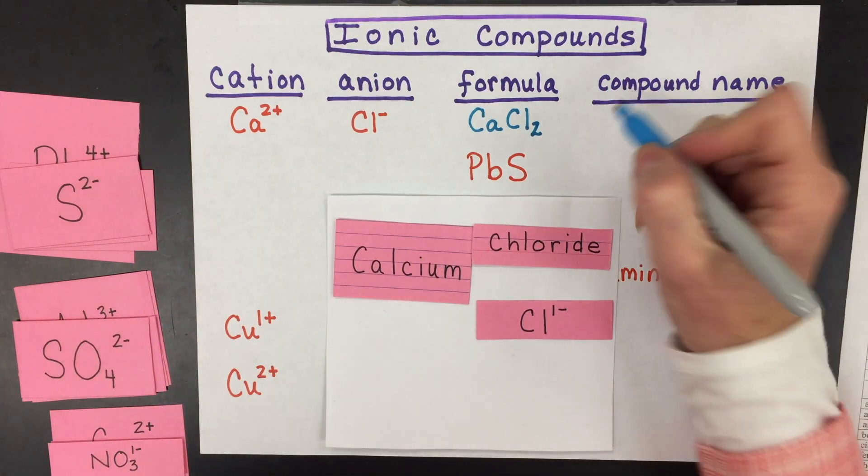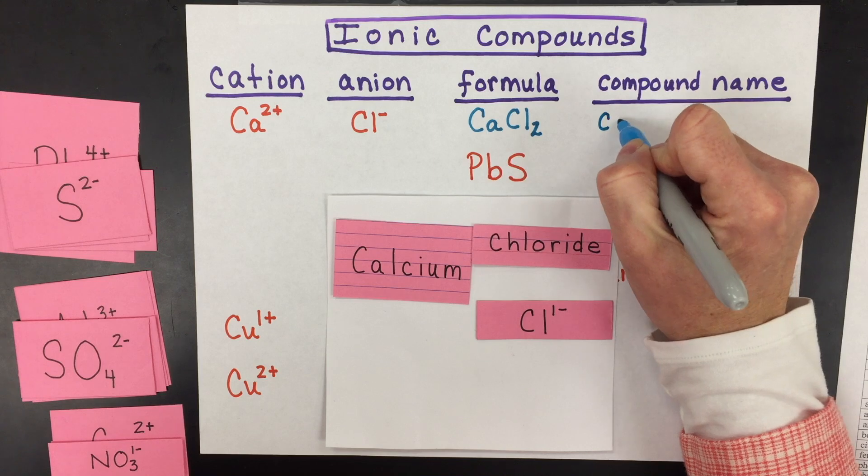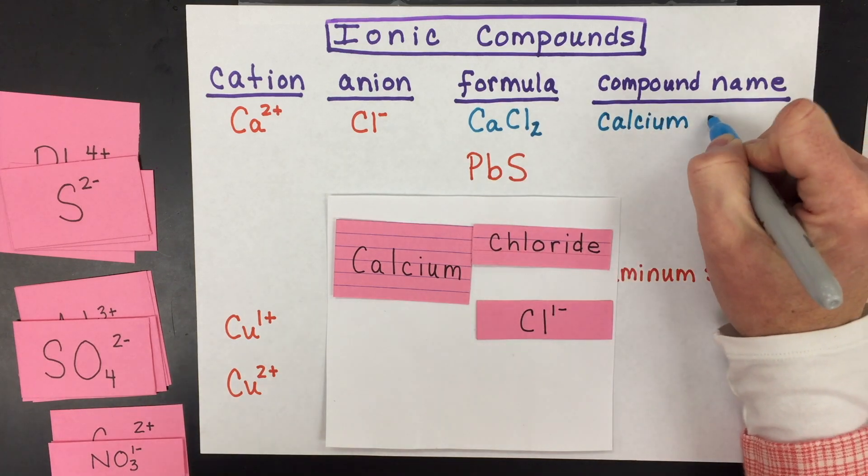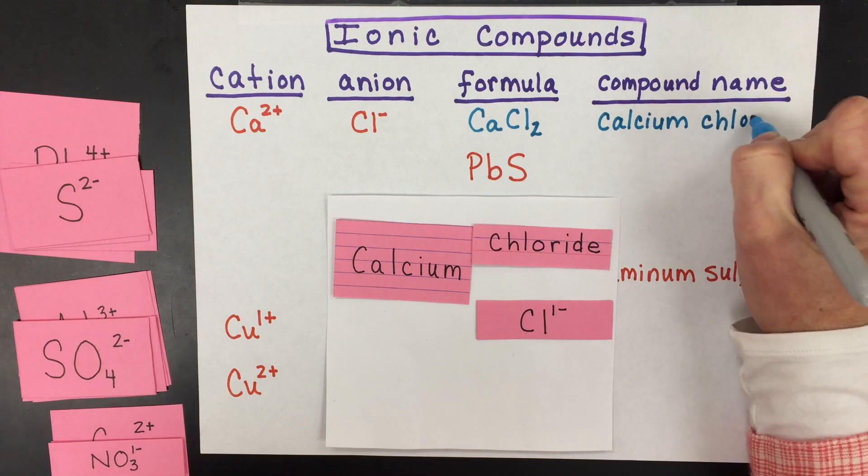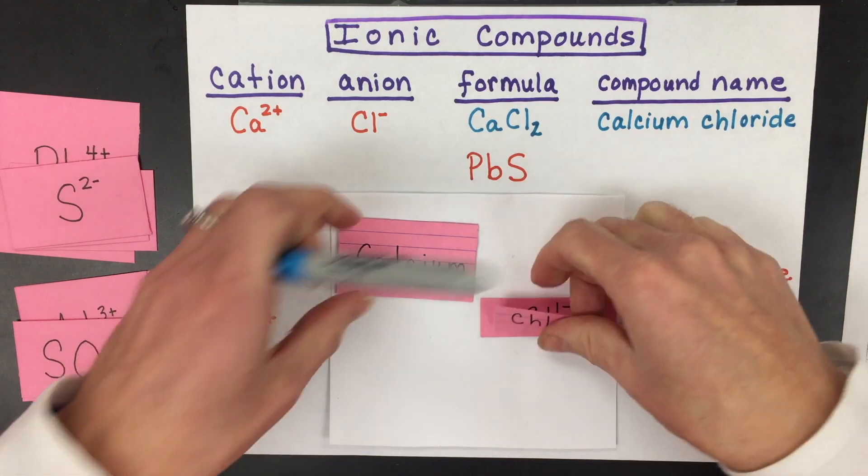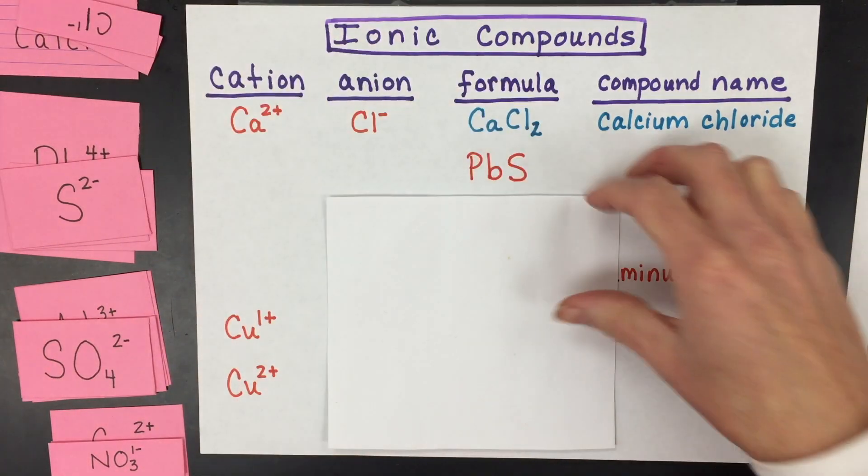And then naming them is probably the easiest part so far. You just have to name the metal, the cation, which is calcium, and then you name the anion, which is chloride, because it has gained an electron and turned into a one minus. So that's our first example.